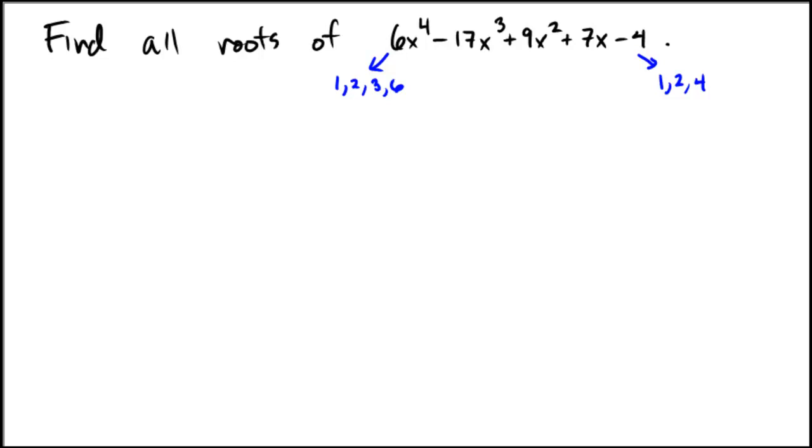So what this means is that by the rational roots test, the only possible rational solutions to this particular polynomial are going to be these factors of the constant term over the factors of the leading coefficient.